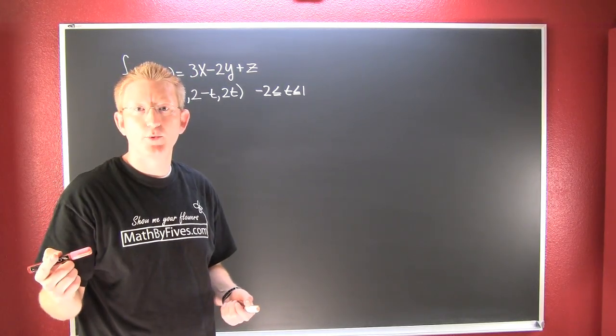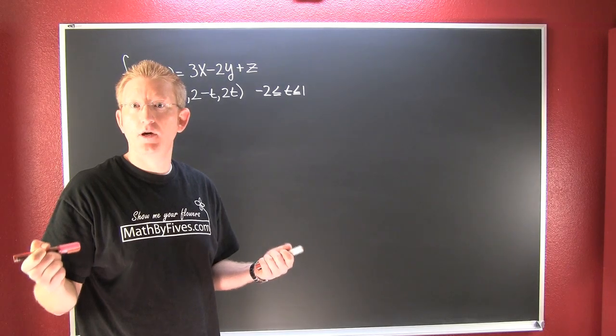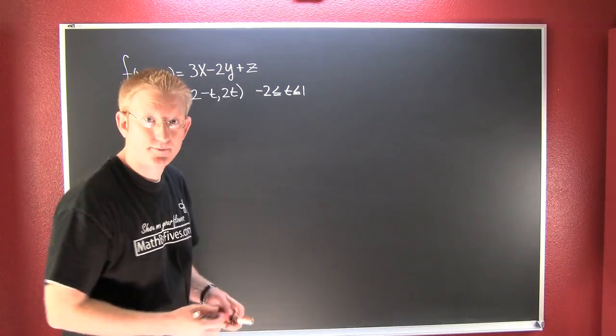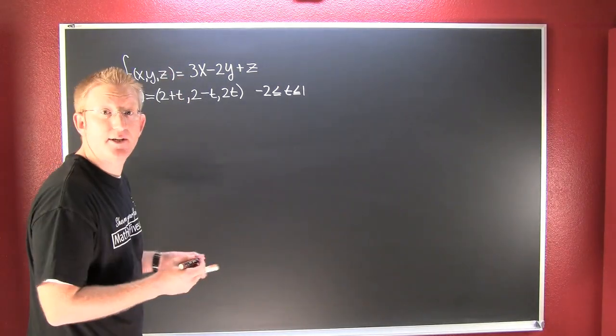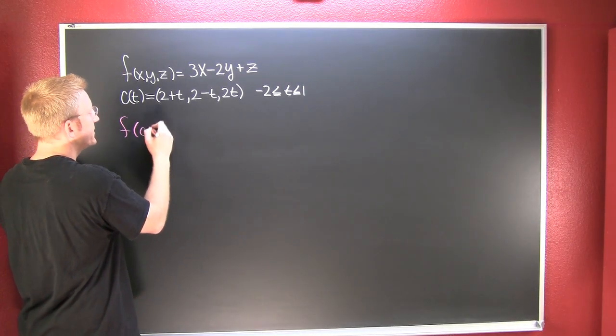Okay, here what we want to do is we want to evaluate a scalar integral with a parametrization. So when doing so, the first thing that we need to find is F of C of T.